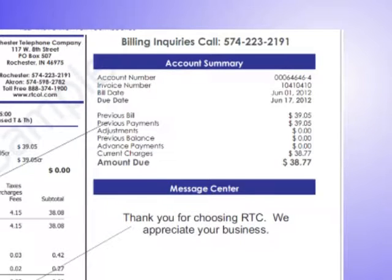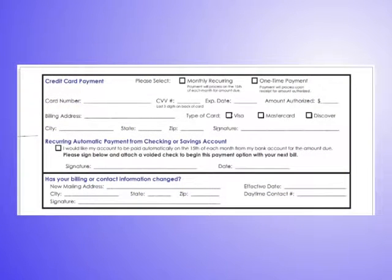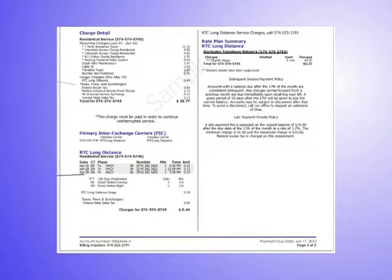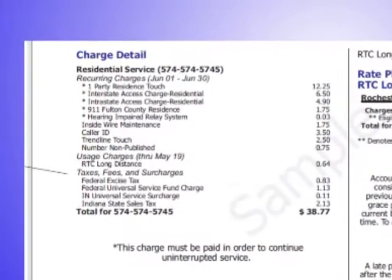This message center section will have information such as special promotions or important account information. The back portion of your bill shows the remittance slip with the automatic payment sign-up information and an area for new billing or contact information. Under the remittance slip are charge details for all your accounts, which will itemize all fees for each of your services.